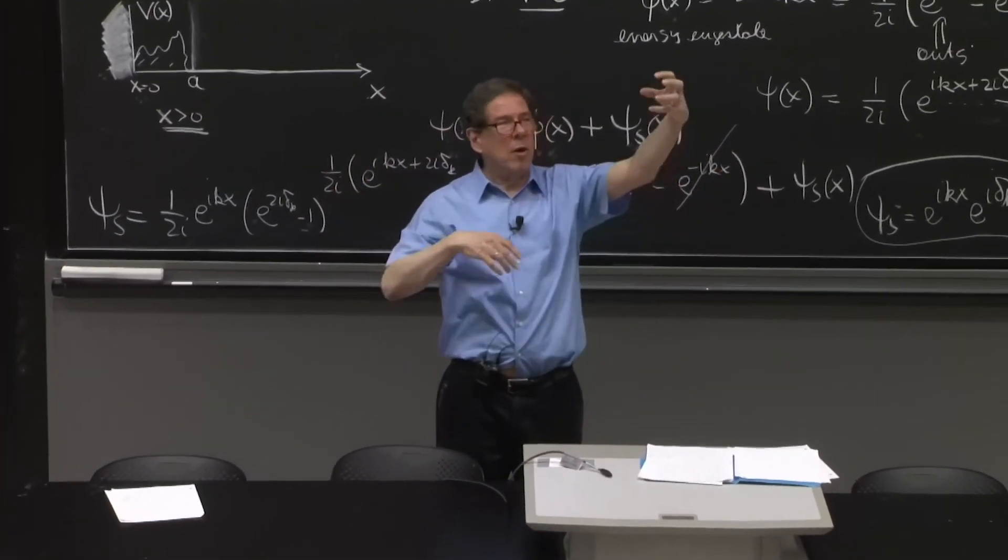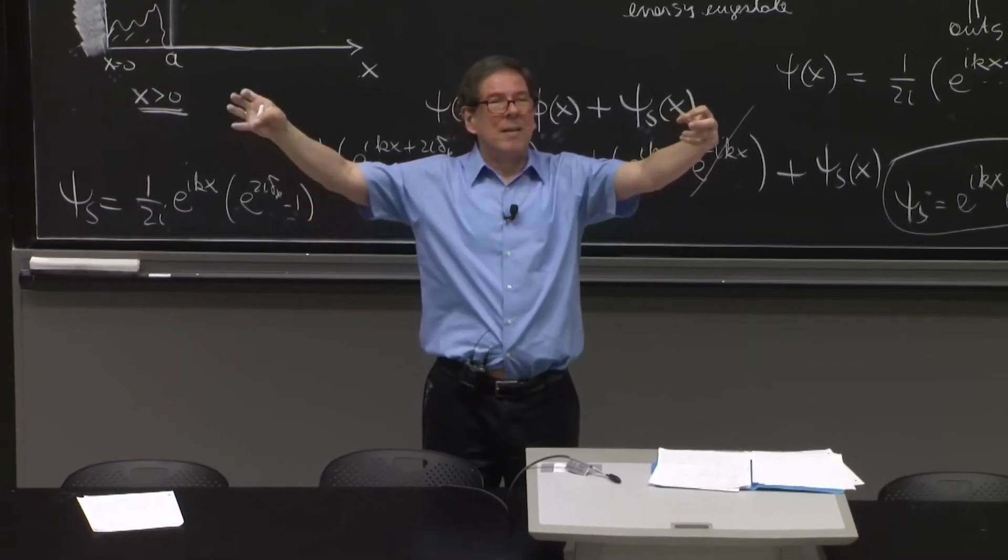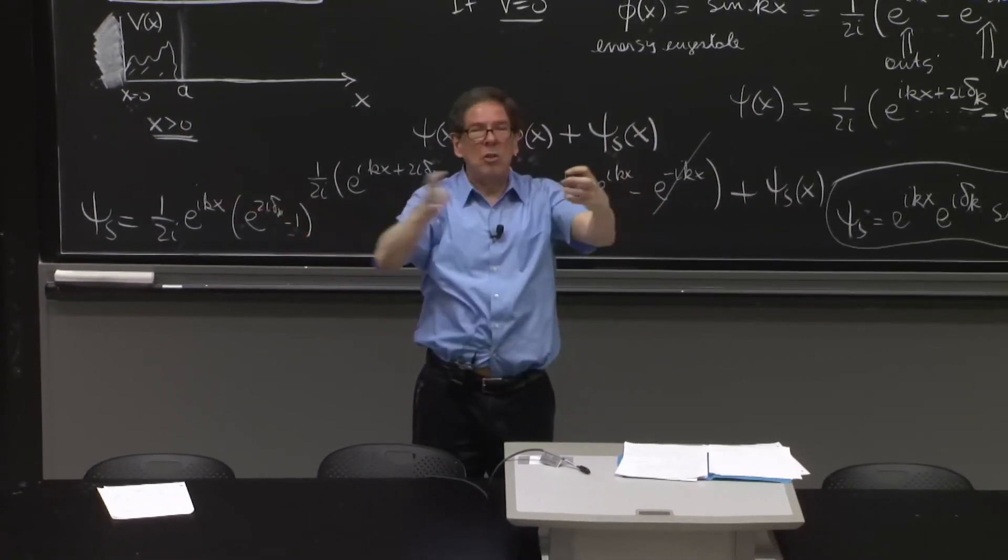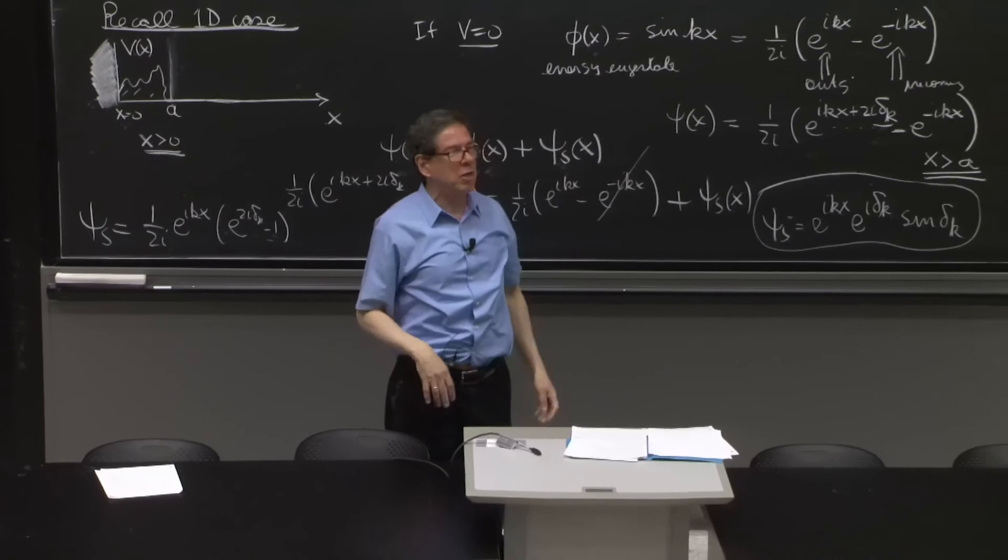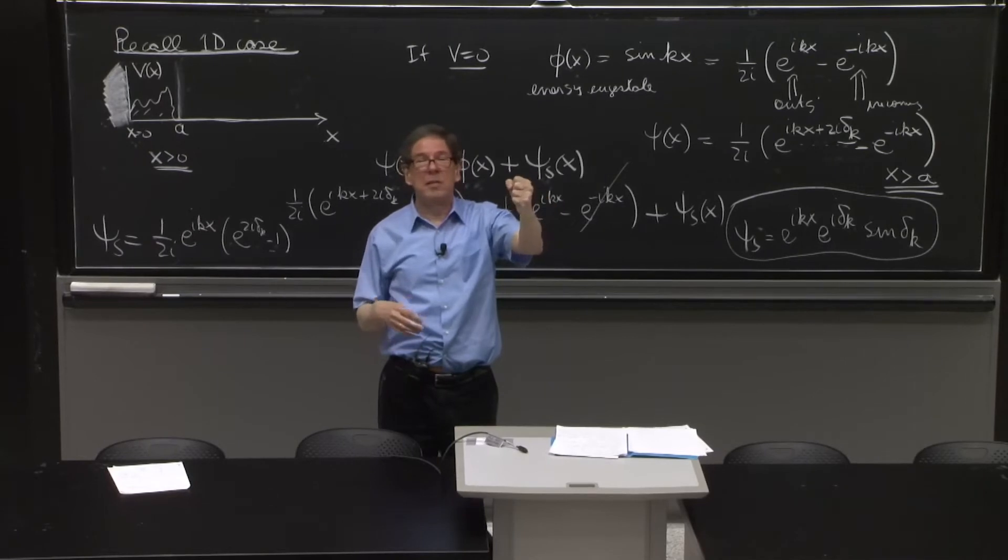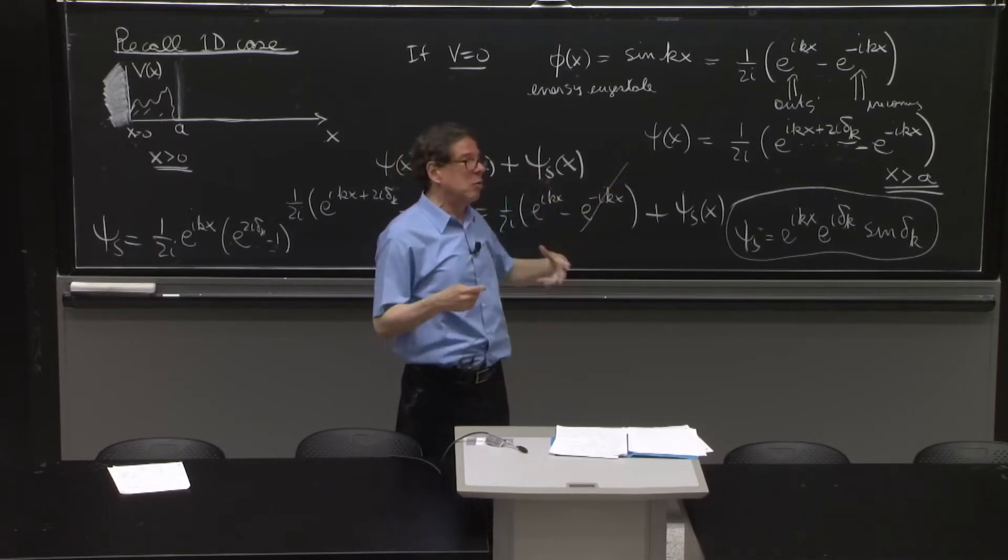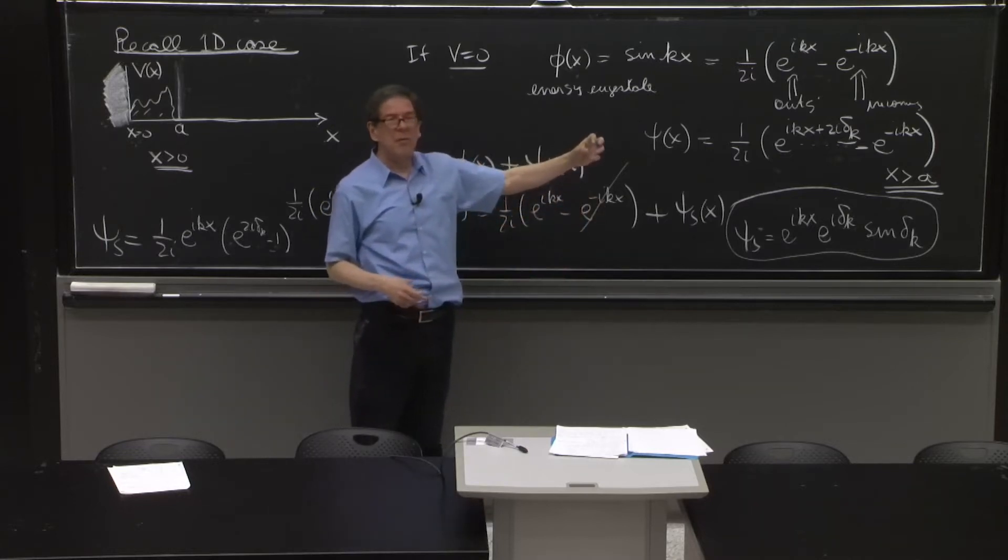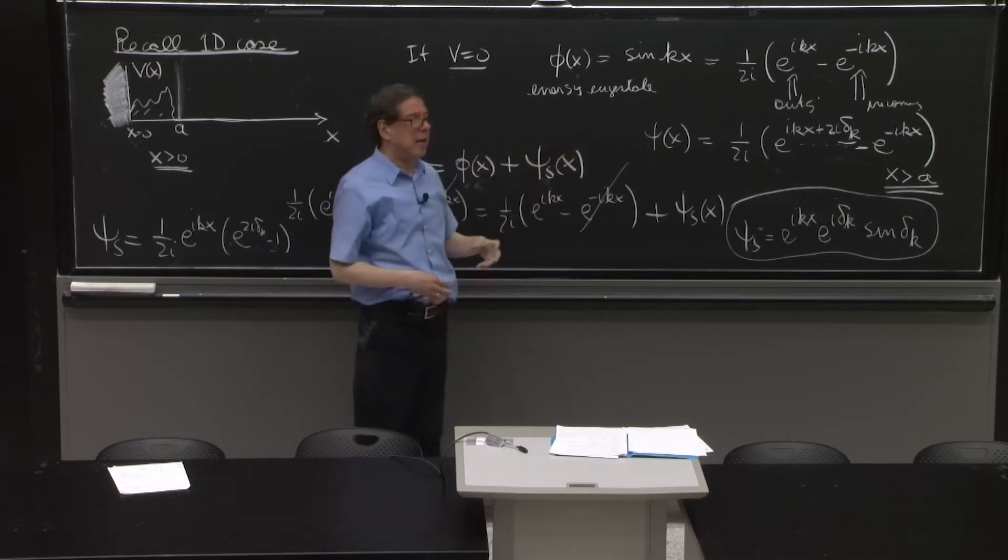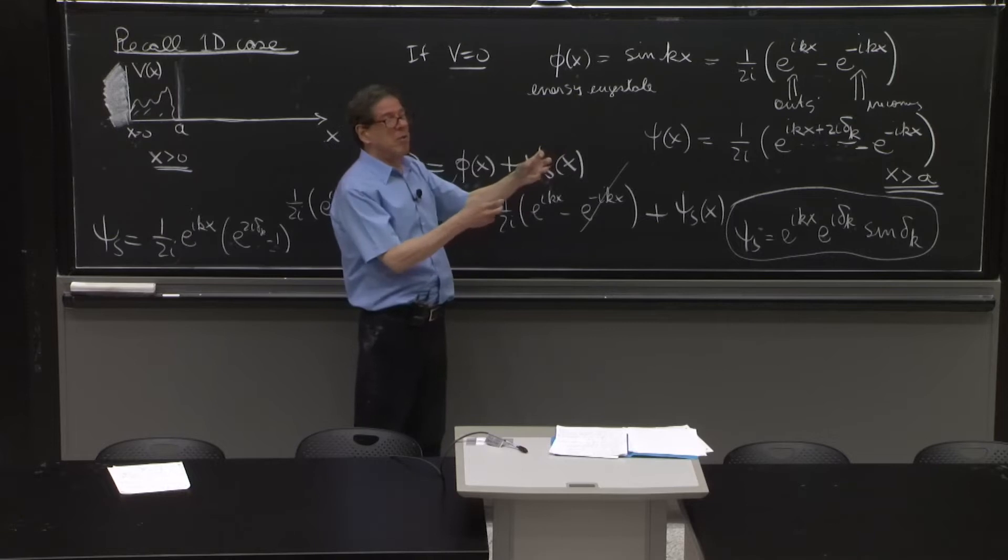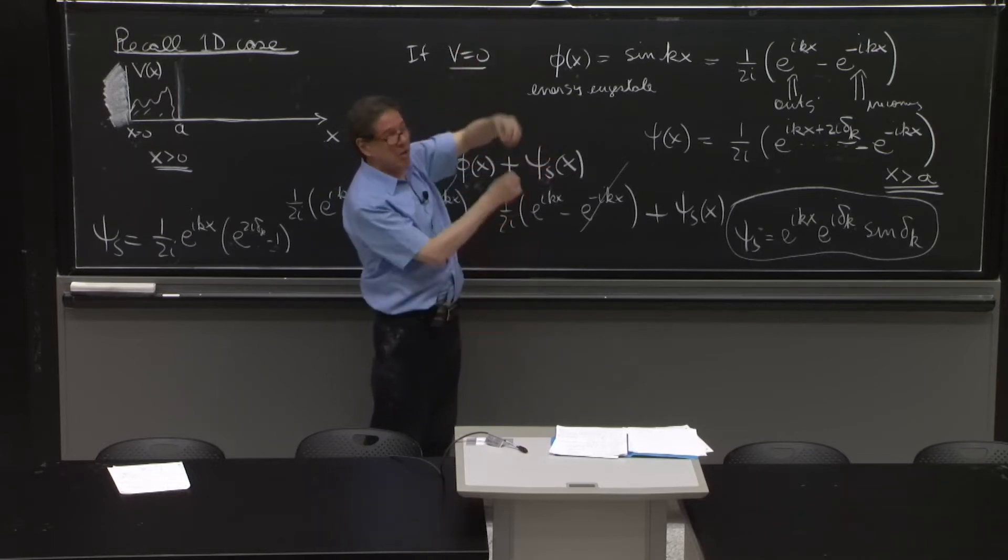Basically, and we may discuss it in a problem, is a statement that when you have an object, the thing that you detect as the scattering cross section is all these particles that were deflected from the object. And they were deflected from the object because the object creates a shadow. At least in electromagnetism, that intuition is very clear. You have a sphere here, maybe a conducting sphere, an absorbent sphere. You shine light. You create a shadow. And that is the light that if you didn't have here, it would have gone through. But if it's here, the shadow is responsible.